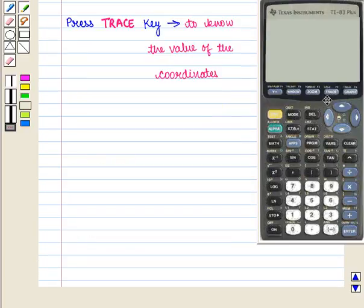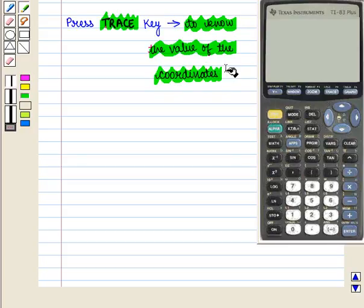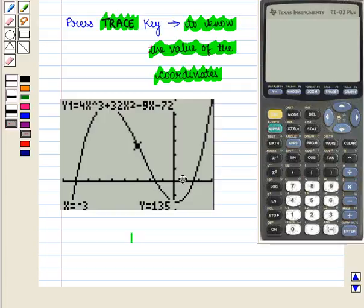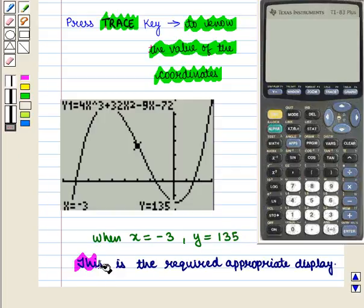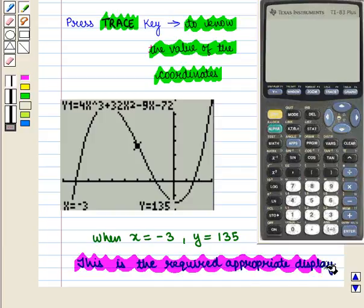Now we press trace key to know the value of the coordinates and we get this display on the screen. Here we see that this point on the graph shows when x is equal to minus 3, y is equal to 135, and this is the required appropriate display.